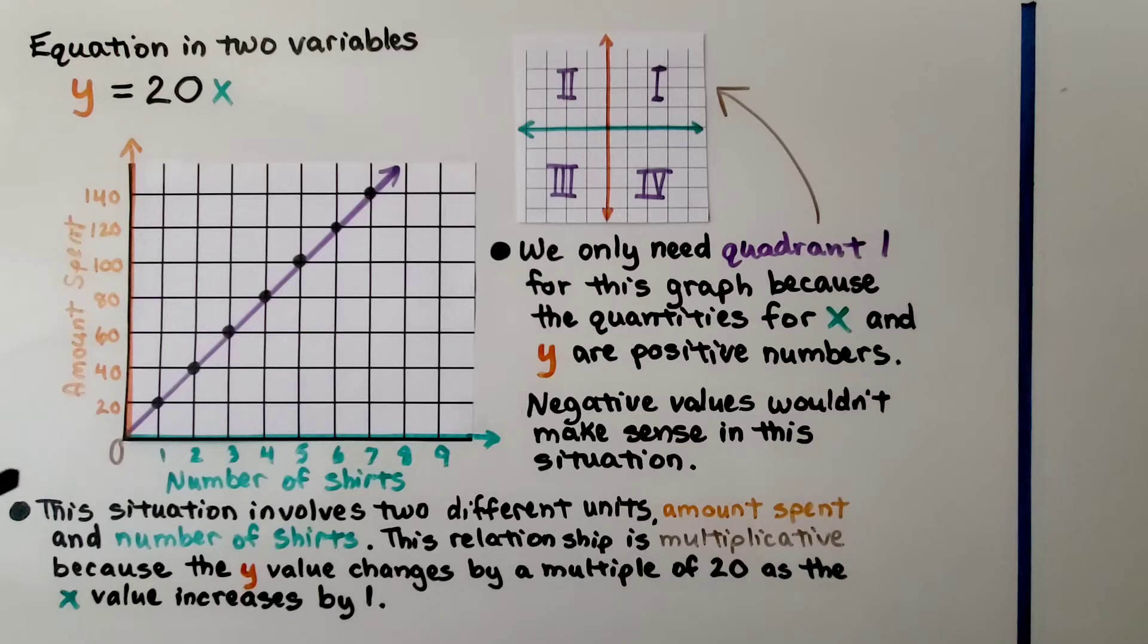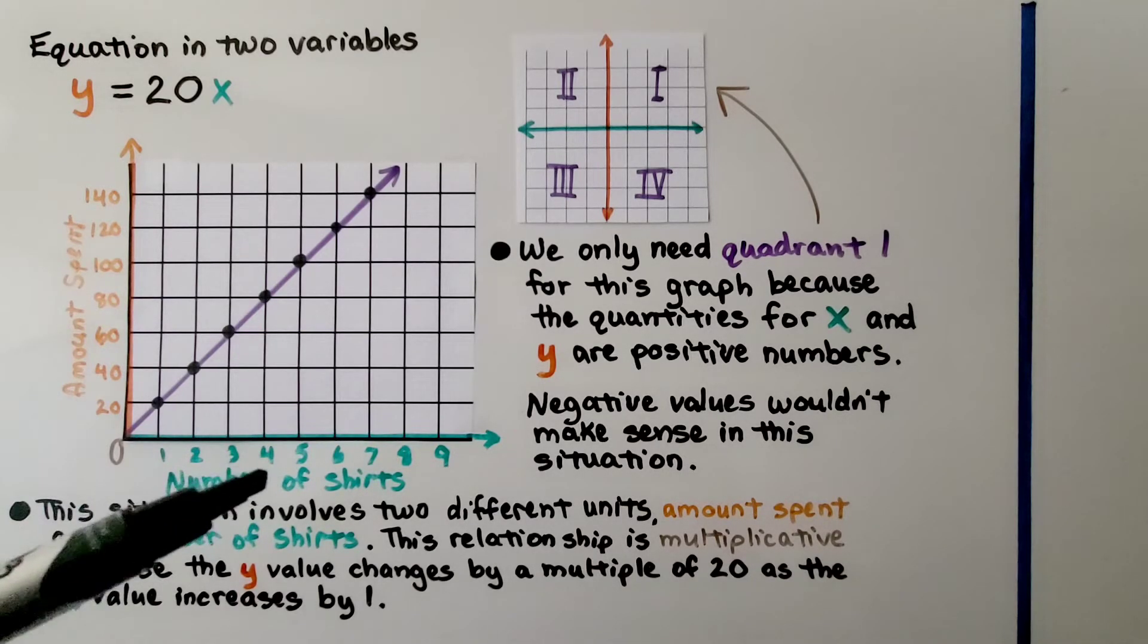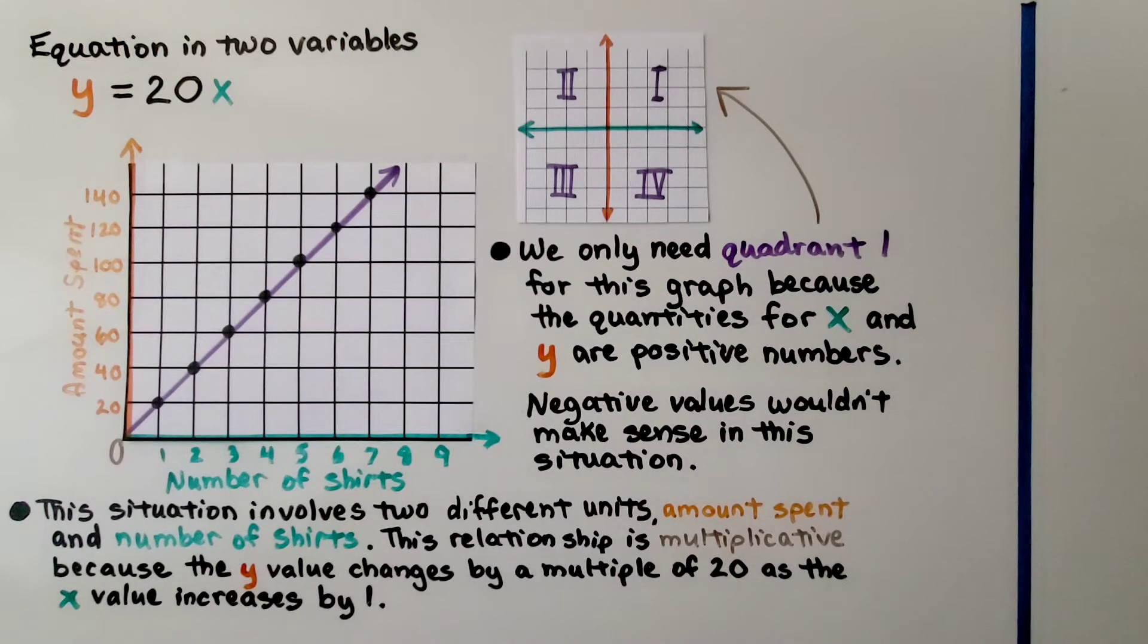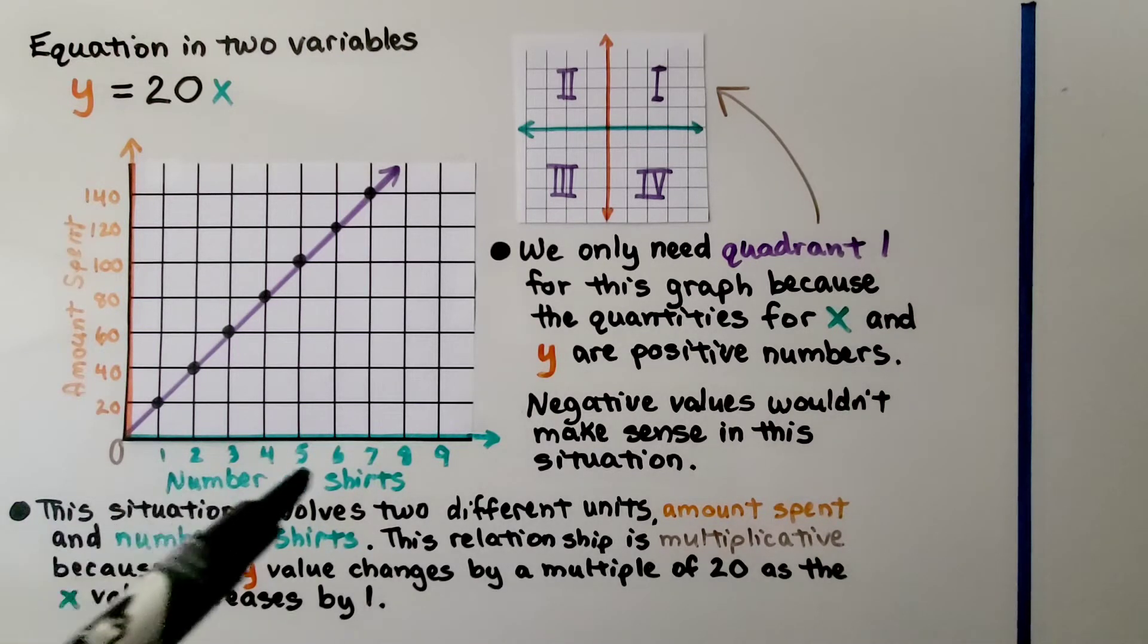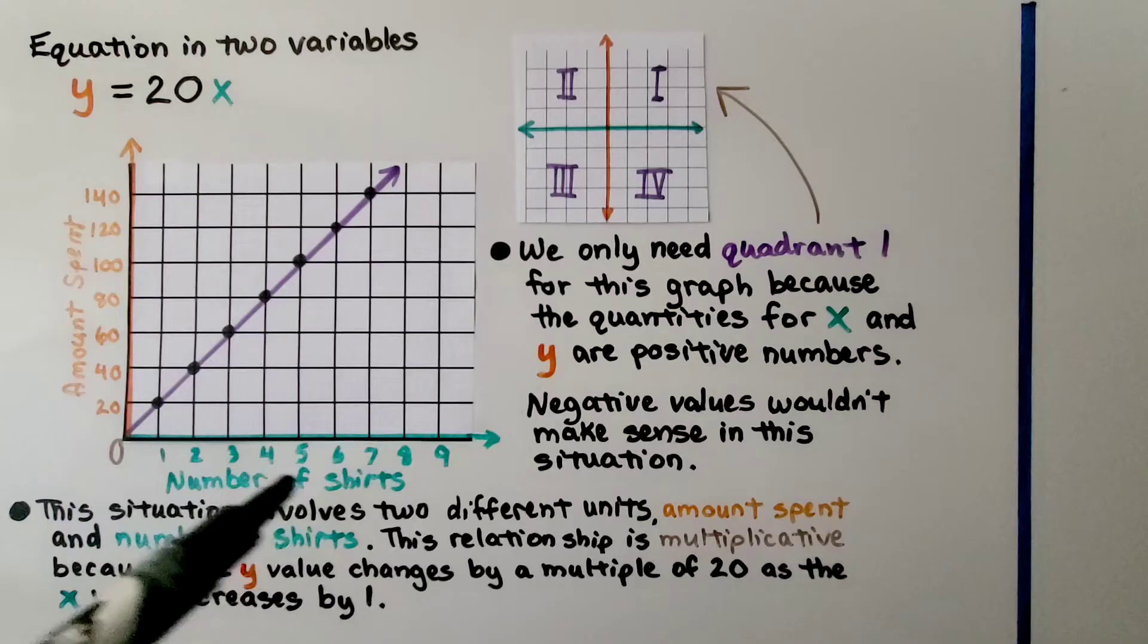This situation involves two different units, amount spent and number of shirts. This relationship is multiplicative because the y value changes by a multiple of 20 as the x value increases by 1.